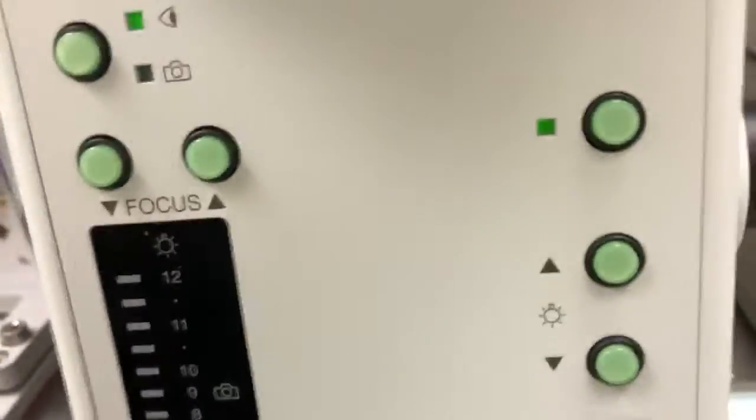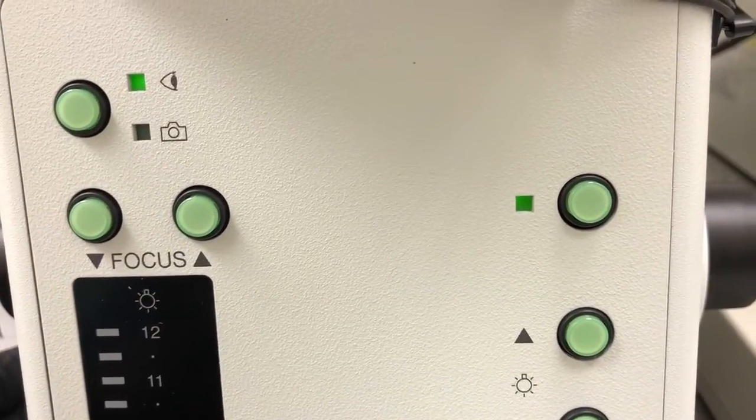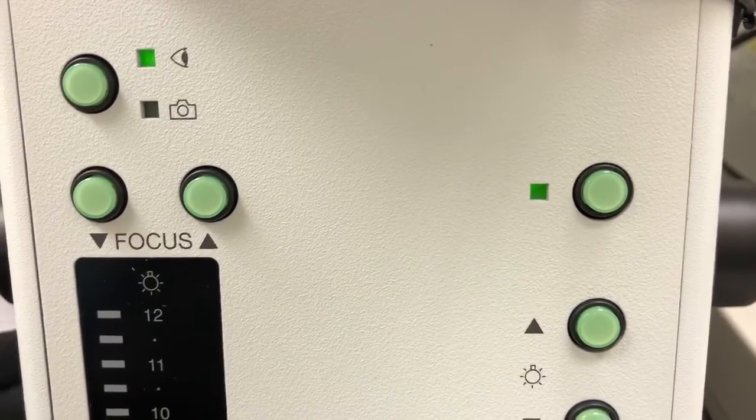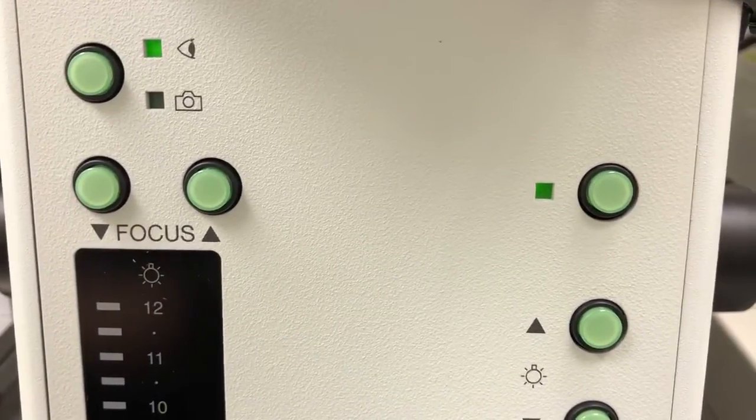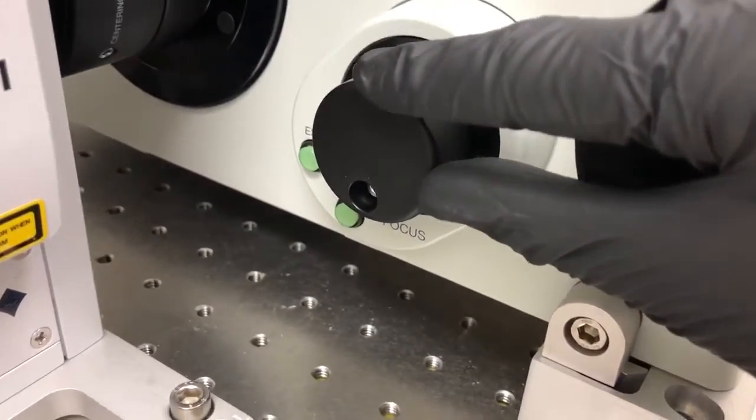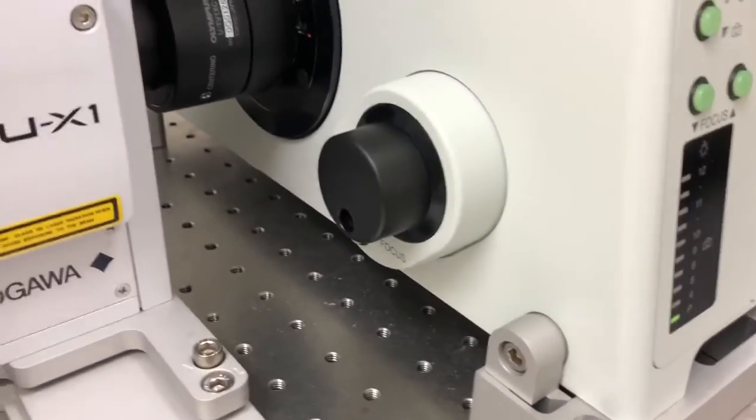If you press that button, you can see that this light here turns on and off. I'm pressing the FC button and you can see that light. When that light is on, it means that the microscope focus is in coarse mode, meaning a small movement of this knob moves the objectives a lot up and down and so affects the focus of what you're seeing a lot.